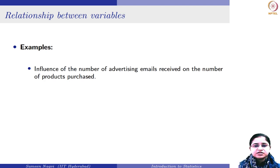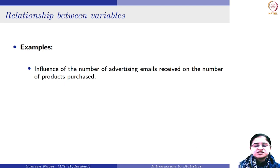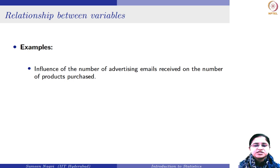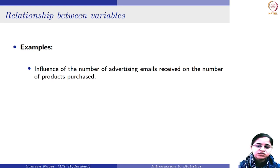Such a study might help the company see what is the optimal number of emails they should send such that the customer does not get offended or overwhelmed. In this case, the number of advertising emails is your independent variable, whereas the number of products is your dependent variable. In both cases, if you look at the nature of these variables, both are of discrete nature because we are focusing on discrete numbers.